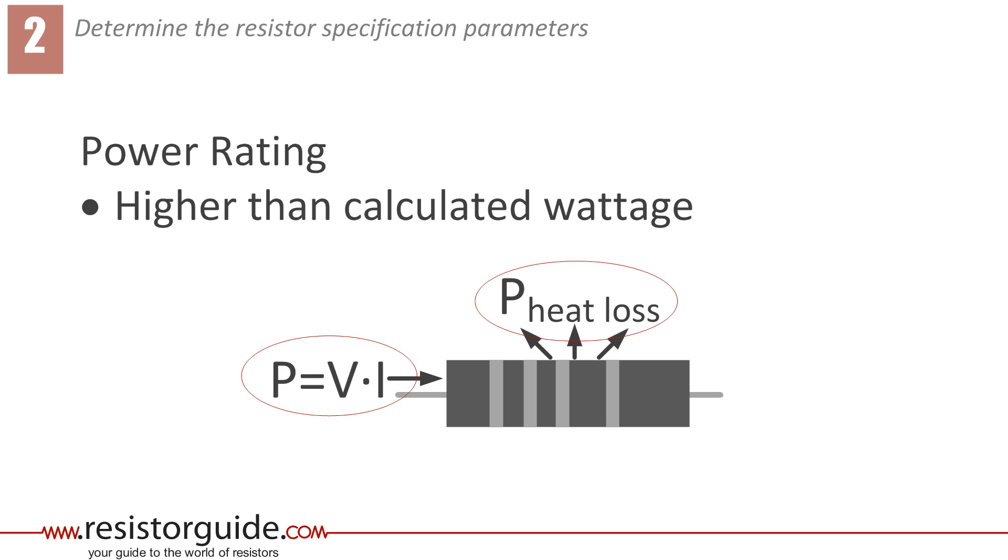Free air wattage rating, or maximum power rating, is defined as the wattage rating of resistors under special standard conditions. But if the resistor is mounted in a hot ambient temperature, or in a tight enclosure, the resistor is not able to lose heat as good, and therefore the power rating needs to be chosen higher.